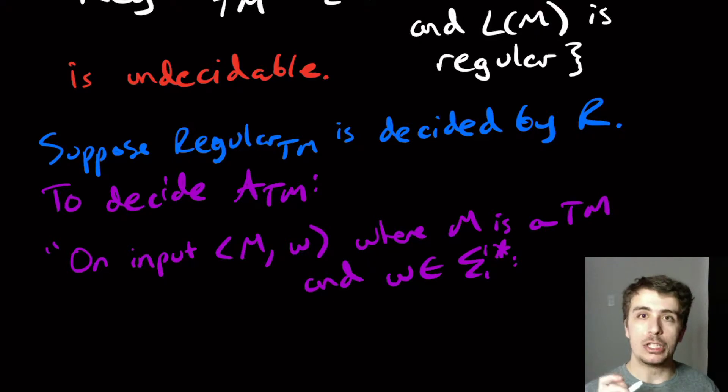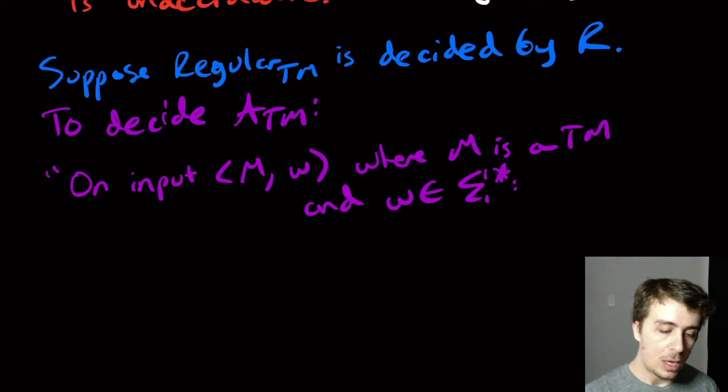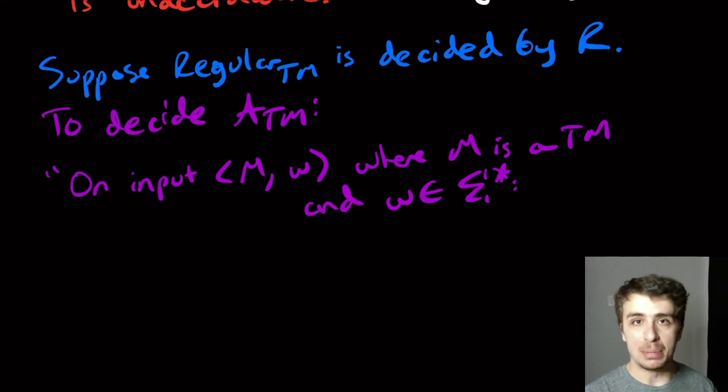So what we need to do, like before, is make a brand new machine that has regular language if and only if M accepts W.